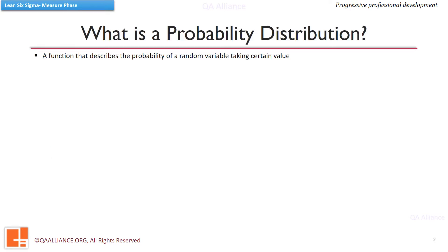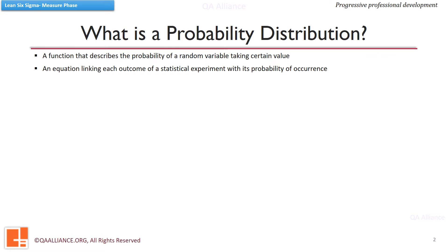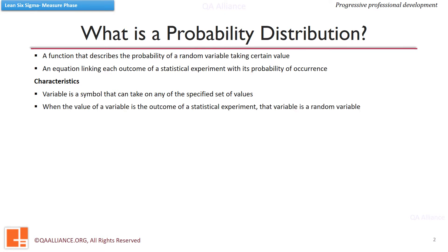Probability distribution is a function that describes the probability of a random variable taking certain values. It is a table or an equation that links each outcome of a statistical experiment with its probability of occurrence. To understand the characteristics of probability distribution, we should know a term called the variable. Variable is a symbol that can take on any of a specified set of values. When the value of a variable is the outcome of a statistical experiment, that variable is a random variable.